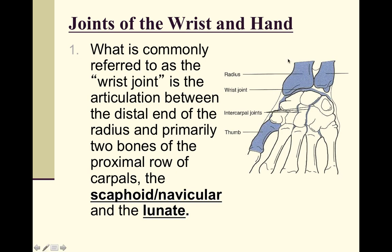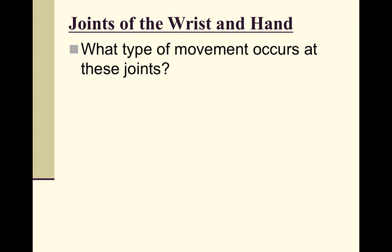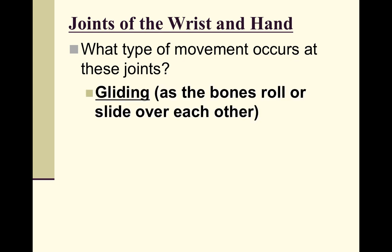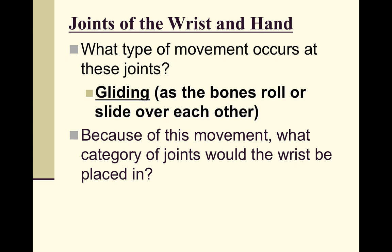Moving on to joints and ligaments, there are many joints and ligaments in the hand. Starting at the radius and moving distally, the true wrist joint is between the radius and the scaphoid and lunate. The eight carpal bones perform gliding movements, which classifies them as condyloid joints. The wrist itself is a condyloid joint.